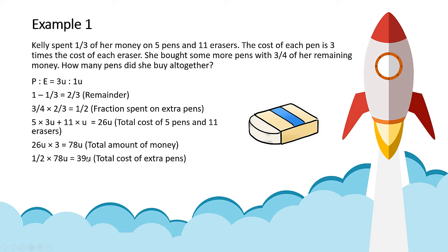And so now, since we know that one pen is 3 units, I can find the number of extra pens that she bought. You take 39 units divided by 3 units. You get 13.